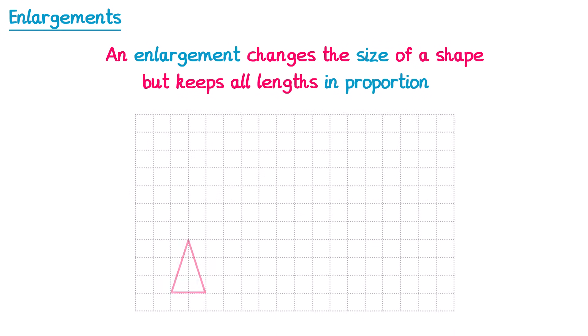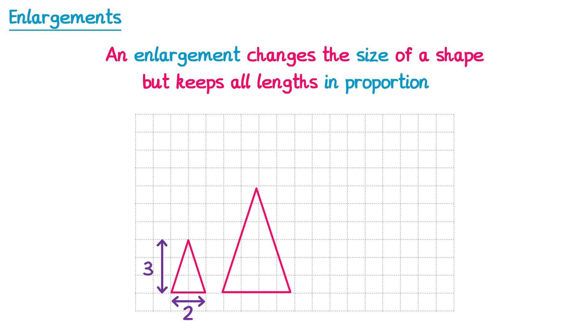If we take this triangle here, we can see the base has a length of two squares and the height is three squares. So if we were to double both of those we will have enlarged the shape. You can now see the base has doubled from 2 to 4 squares and the height has doubled from 3 to 6. So this is an enlargement.